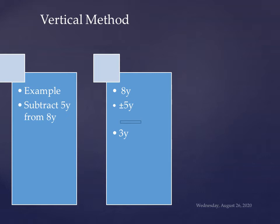8 minus 5 is 3y. And the sign of answer is of greater term. Greater term is 8y. Here is plus. So in the answer we will must write plus 3y.